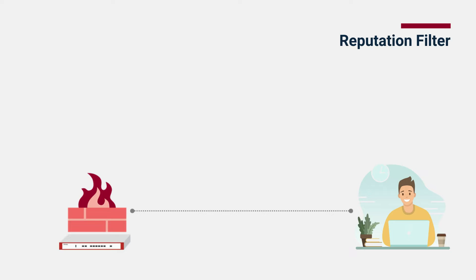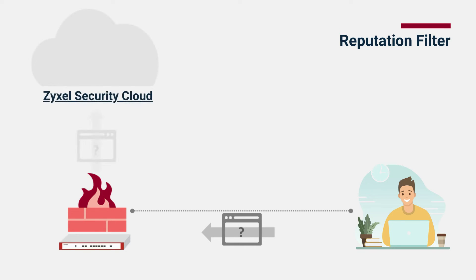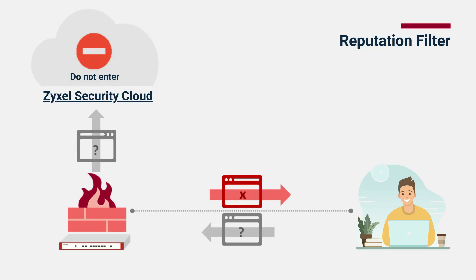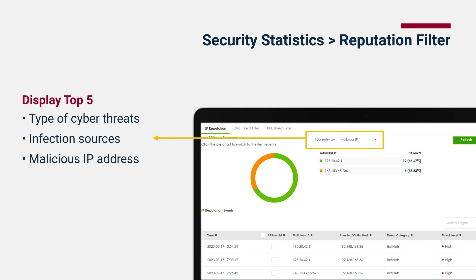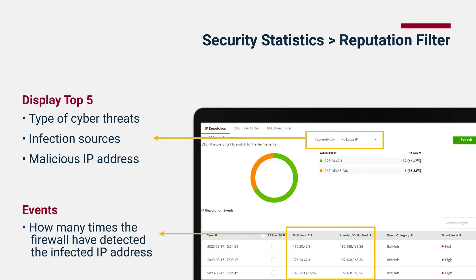Another powerful security service is the reputation filter. In general, almost 70% of common cyber attacks originate from web access. The reputation filter analyzes the reputation of network traffic, including IP, DNS, and URLs, and automatically restricts access to compromised sources. Leverage the reputation filter statistics to identify various cyber threats and pinpoint the most malicious IP addresses. Additionally, access detailed logs showing computers repeatedly connecting to malicious websites within a 24-hour time frame.